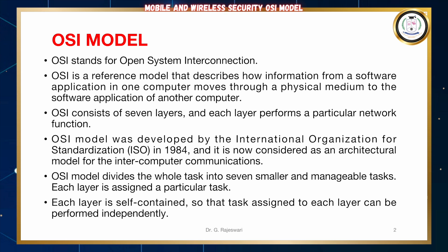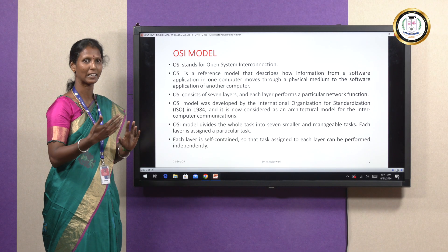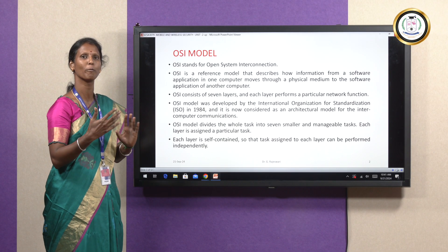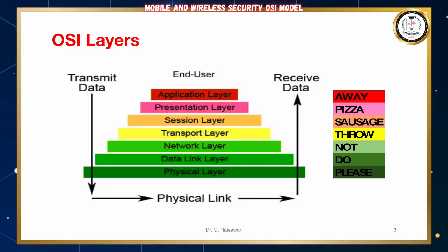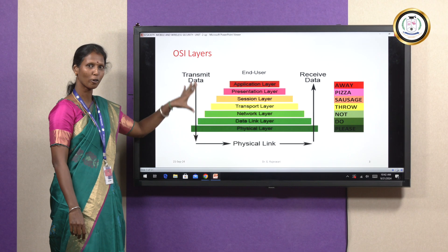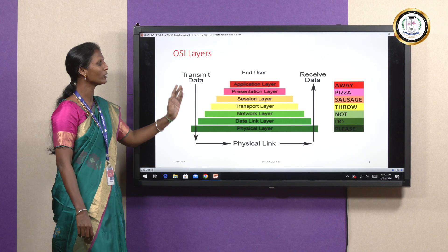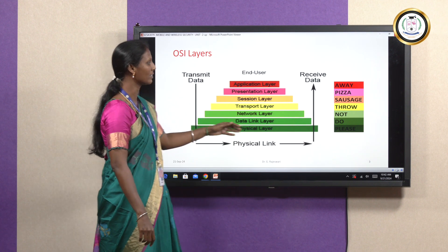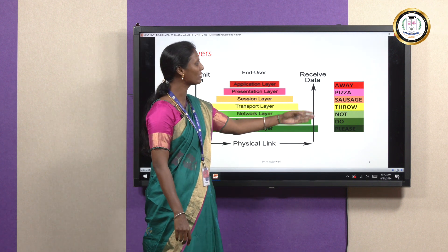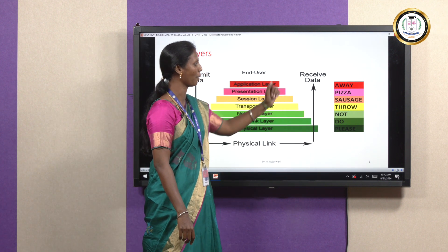Each layer is self-contained so that the task assigned to each layer can be performed independently without involving the other layers. The seven layers are: Physical Layer, Data Link Layer, Network Layer, Transport Layer, Session Layer, Presentation, and Application. The order of these layers is very important. The easiest way to remember this order is: please do not throw sausage pizza away.